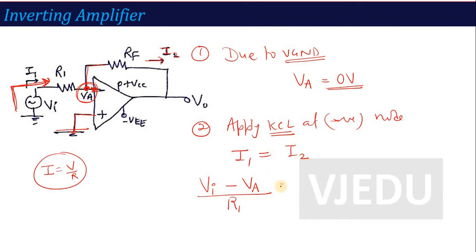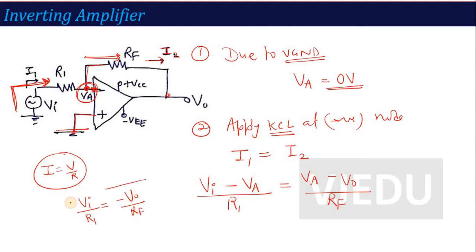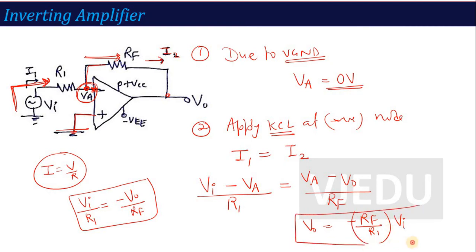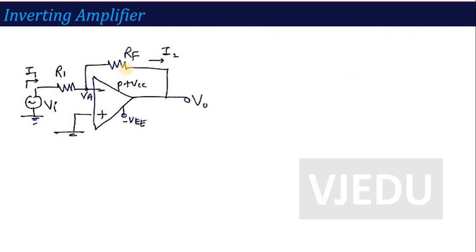Substituting Va = 0 into the KCL equation gives Vi/R1 = −V0/Rf. Solving for V0: V0 = −(Rf/R1) × Vi. This is the output voltage for the inverting amplifier. The minus sign confirms inversion — a positive input produces a negative output — and the ratio Rf/R1 provides amplification. For example, if Rf = 5 kΩ, R1 = 1 kΩ, and Vi = 5 V, then V0 = −25 V.